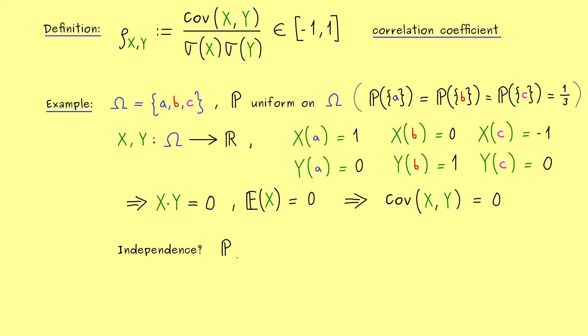And there you have to recall what does it mean that two random variables are independent. It simply means that the two events X is less or equal than x and Y is less or equal than y are independent events. More precisely, it means that the probability of this event can be written as a product of two probabilities. Indeed, this is how we have defined independence of random variables. And moreover, it should hold no matter which numbers you choose for lowercase x and lowercase y.